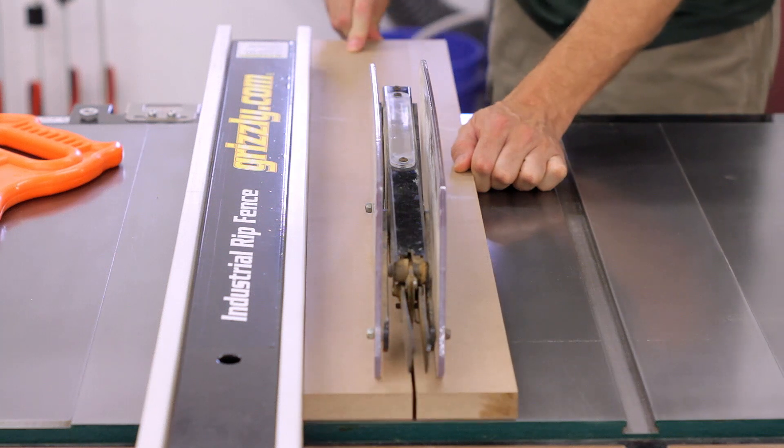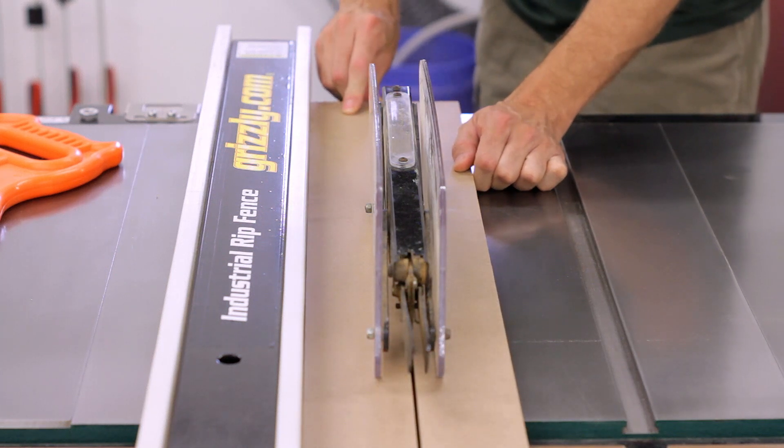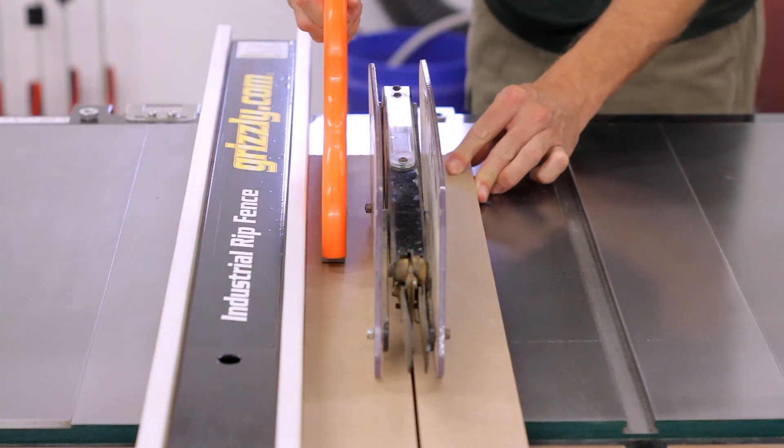The next rack is just a longer version of the first that will hold 14 large F-style clamps including Bessie K-body parallel clamps.